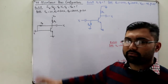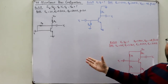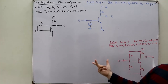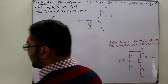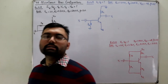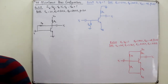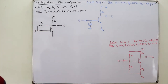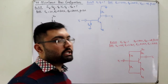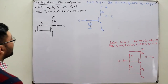This first one is a collector feedback configuration, which we have not seen in the basic ones, so we call it a miscellaneous one. This second one is a voltage divider with a dual supply. The basic approach is applying Kirchhoff's voltage law to the input loop and output loop — you're given the values and can find the unknown parameters quite easily.